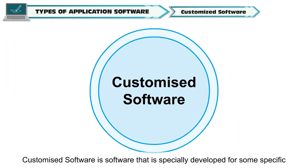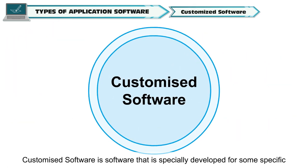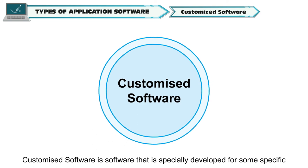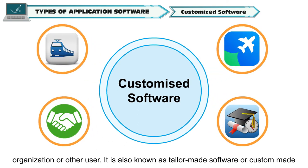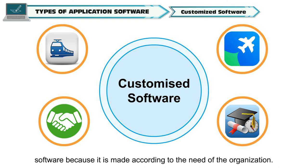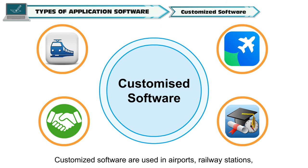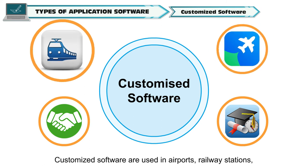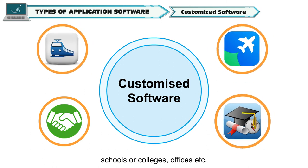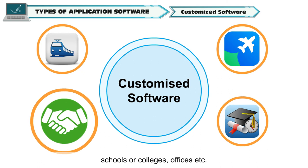Customized software is software that is specially developed for some specific organization or other user. It is also known as tailor-made software or custom-made software because it is made according to the need of the organization. Customized software is used in airports, railway stations, schools or colleges, offices, etc.